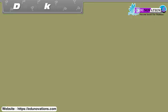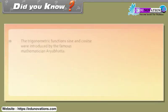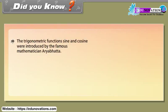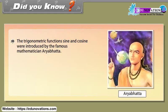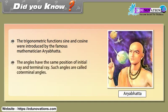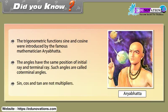Did you know? The trigonometric functions sine and cosine were introduced by the famous mathematician Aryabhata. Angles that have the same initial ray and terminal ray are called coterminal angles. Sin, cos, and tan are not multipliers.